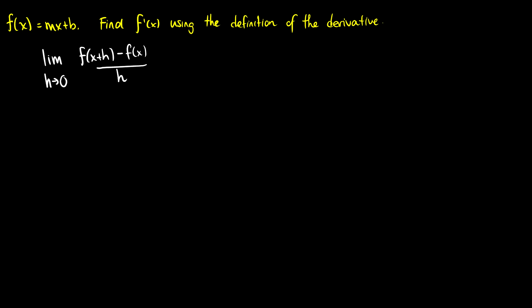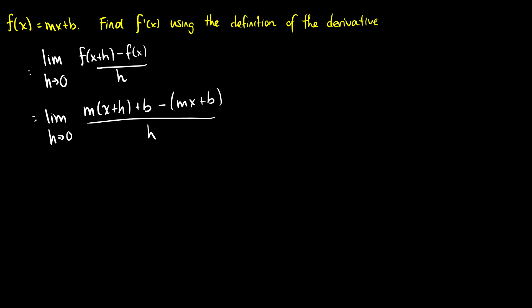We can do some substitution here. This will be the limit as h goes to zero. We plug in f of x plus h, so we're going to get m times x plus h plus b, minus f of x which will be mx plus b, all over h.